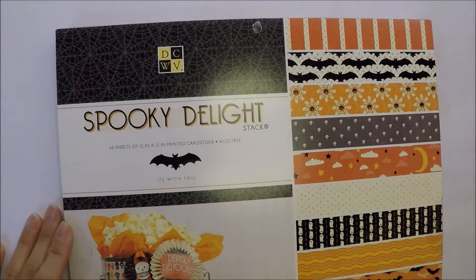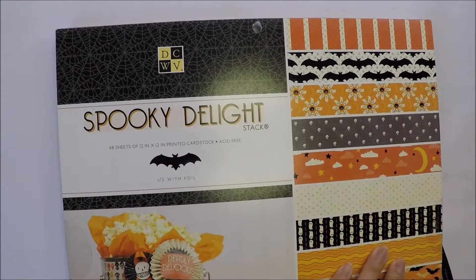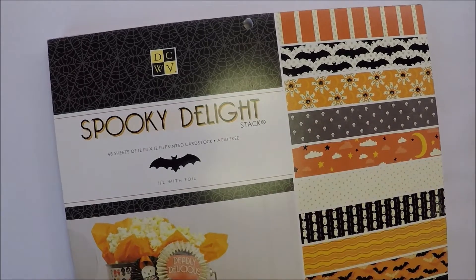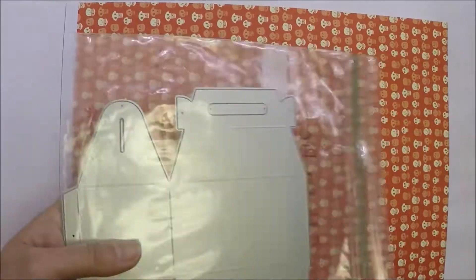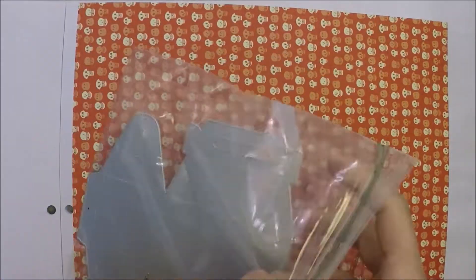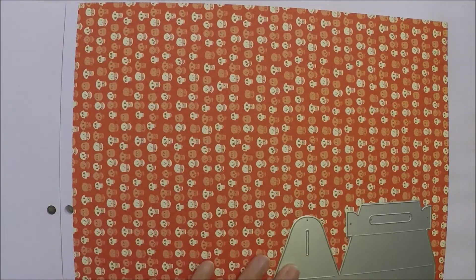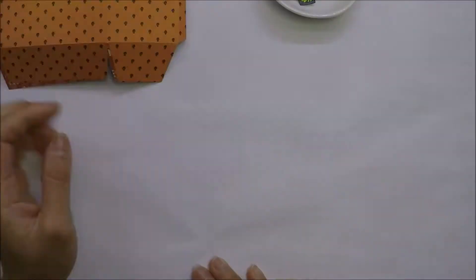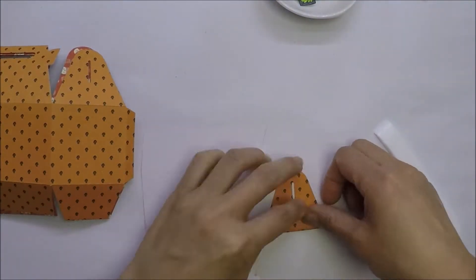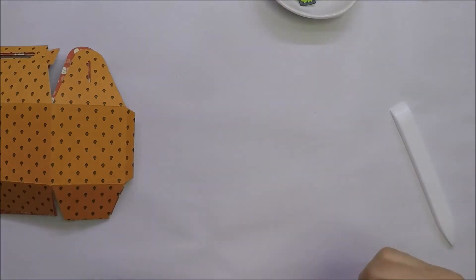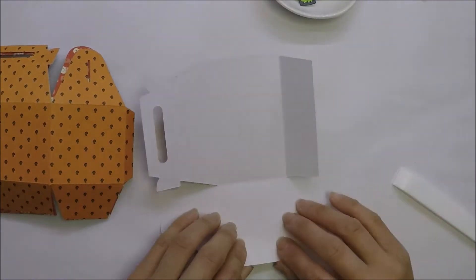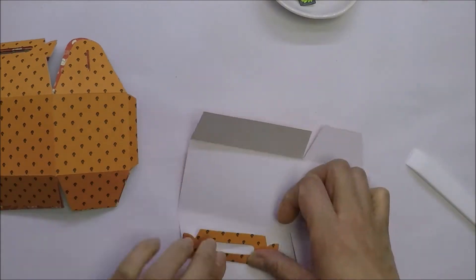For the treat boxes, I used this paper from DCWV Spooky Delight 12x12 paper pad. I will use two patterns from the paper pad. I will also use this gable box die to die cut my paper. I have die cut all my paper and I will fold all the creases on the die cut boxes using my Teflon bone folder before I assemble them.